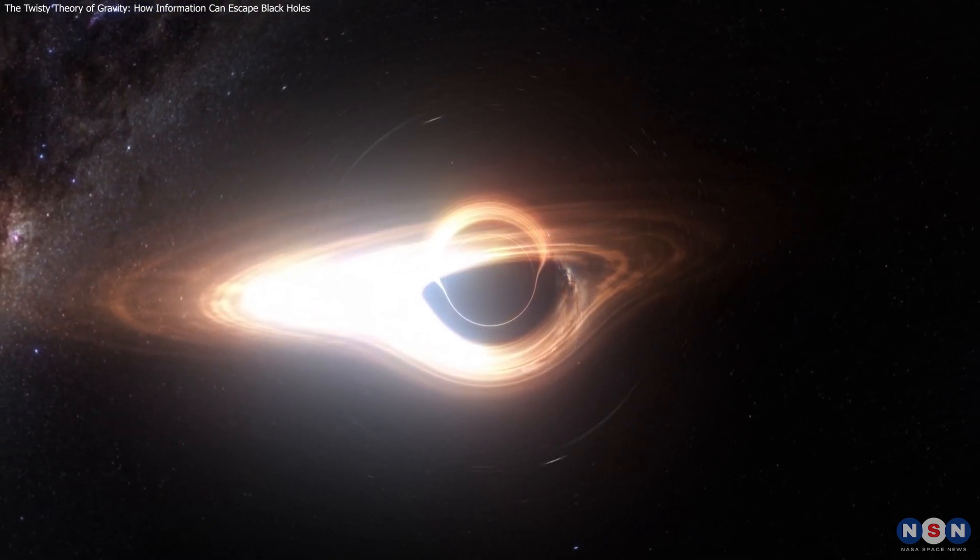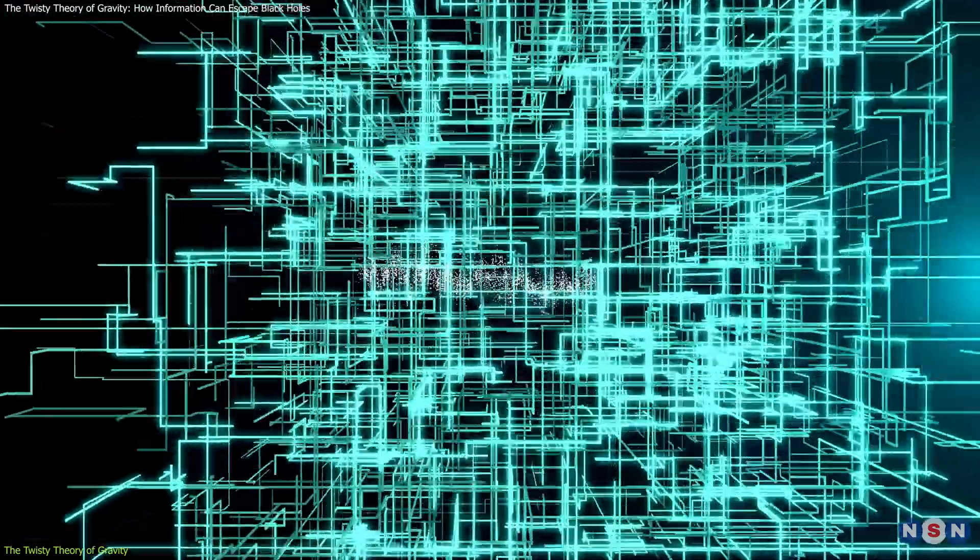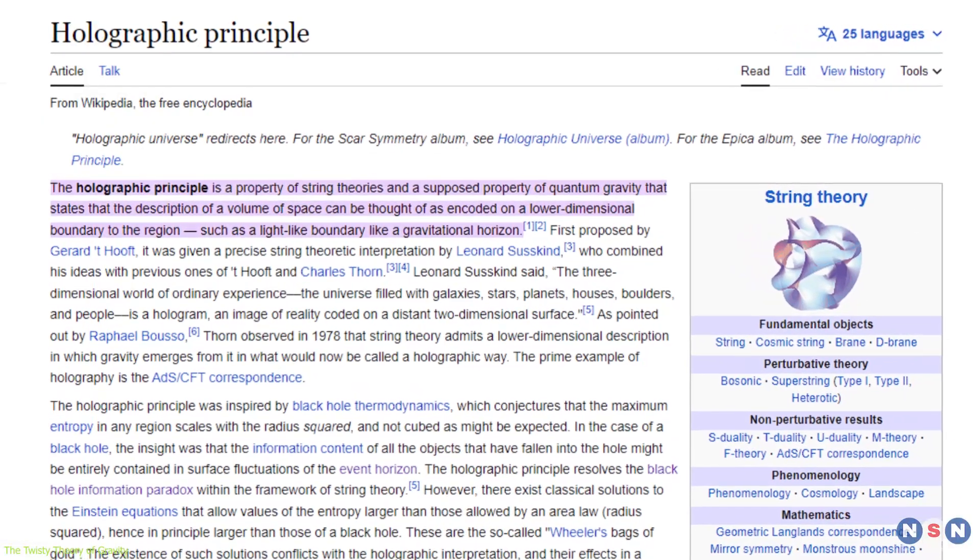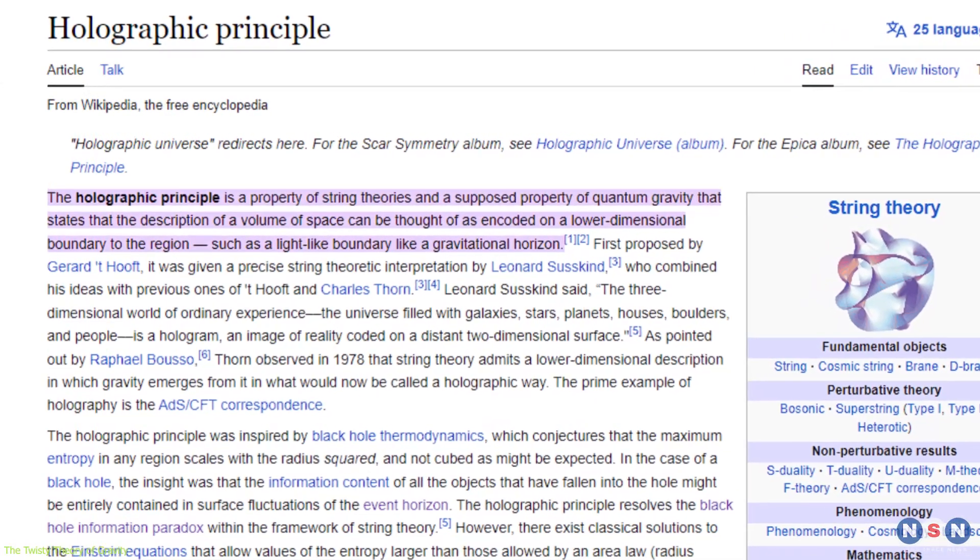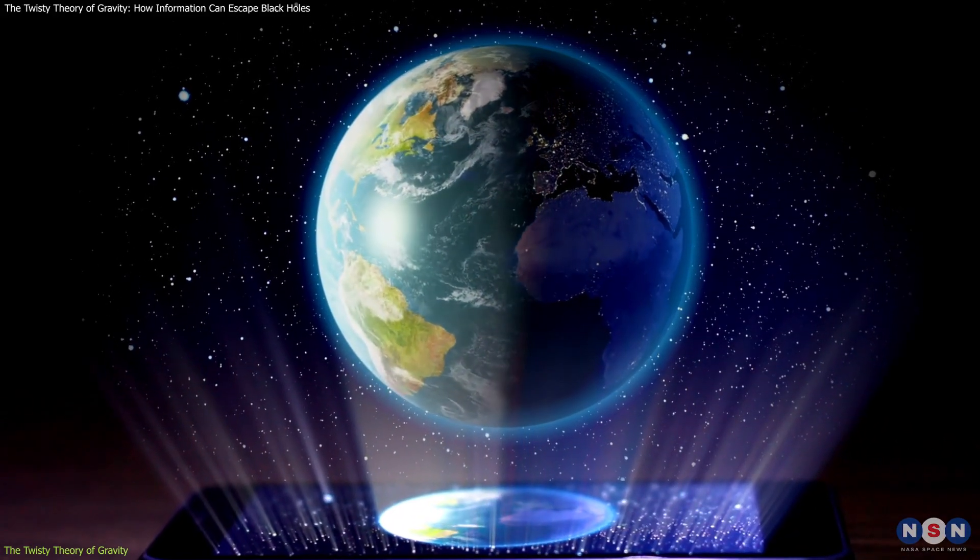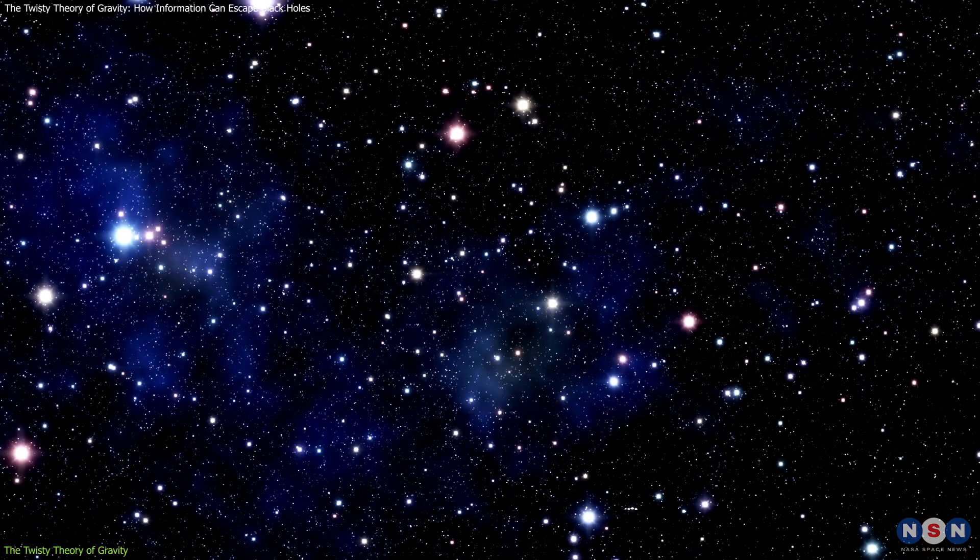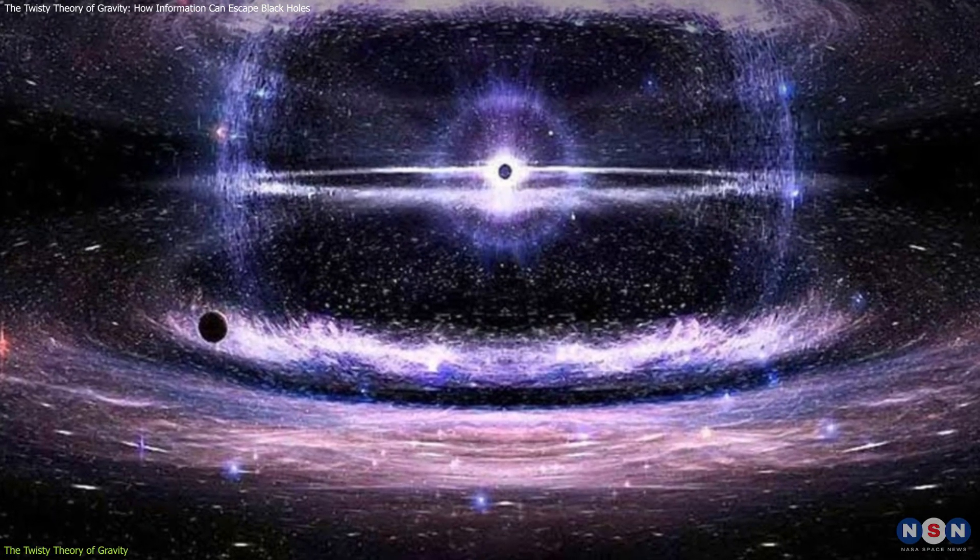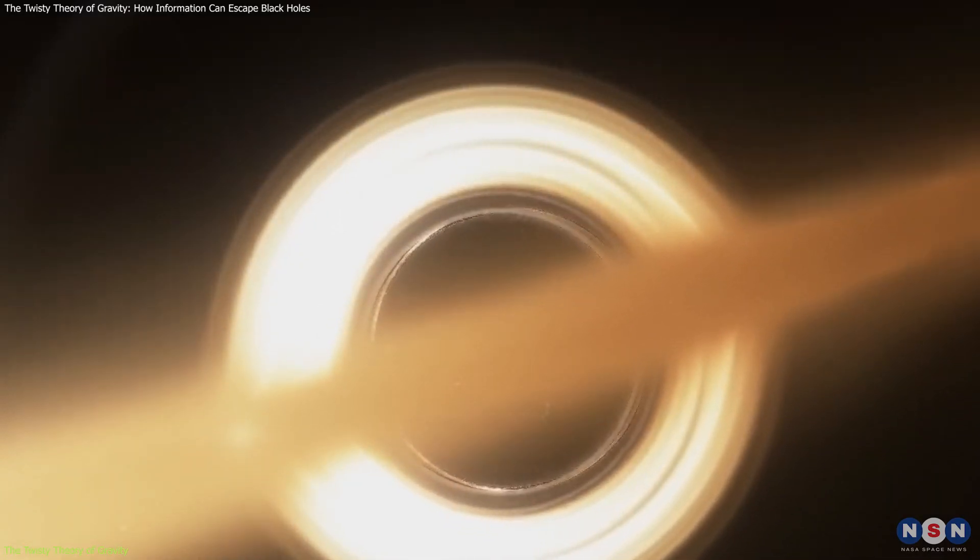One possible way to resolve the paradox is to assume that information is not really lost inside black holes, but rather encoded in some subtle way on their surfaces. This idea is known as the holographic principle, and it suggests that the information content of a region of space can be described by a lower-dimensional boundary of that region. For instance, a two-dimensional surface like a hologram can encode a three-dimensional volume. The holographic principle implies that space and time are not fundamental, but emerge from more fundamental degrees of freedom that live on lower-dimensional boundaries.